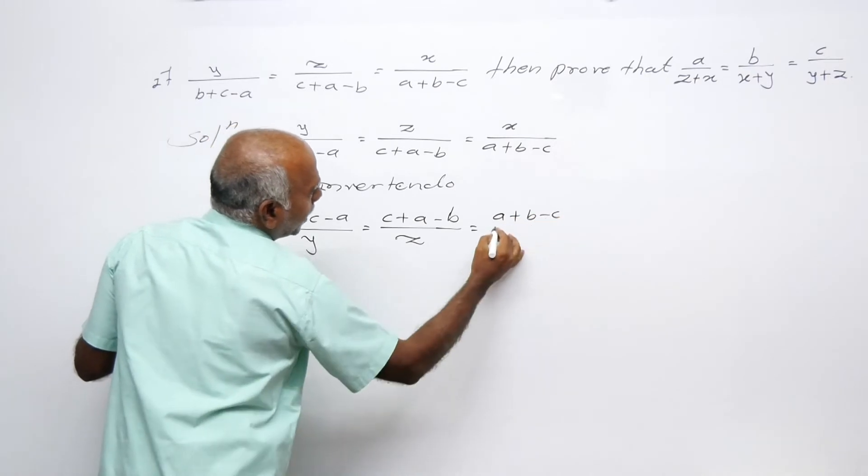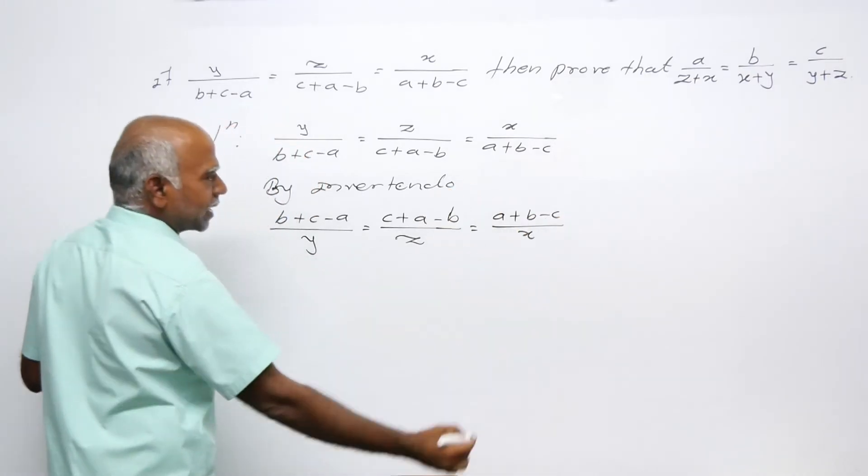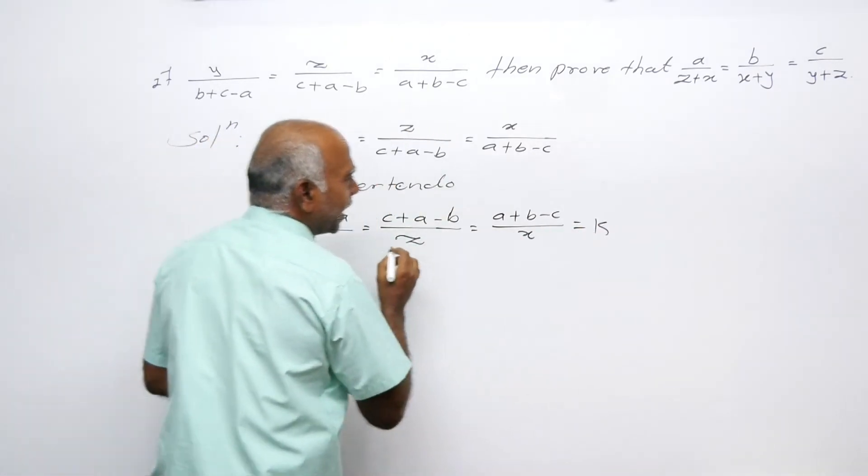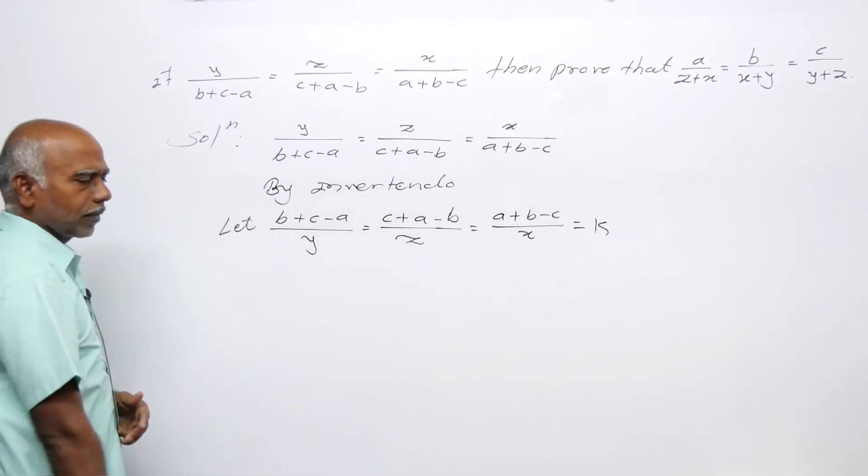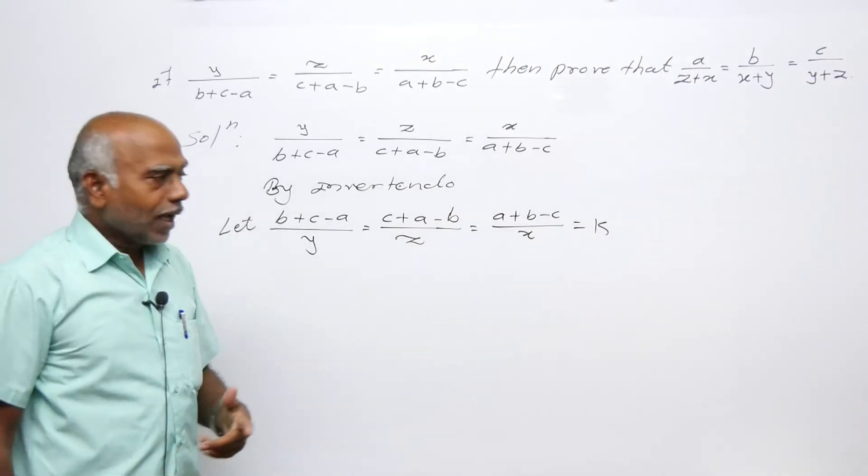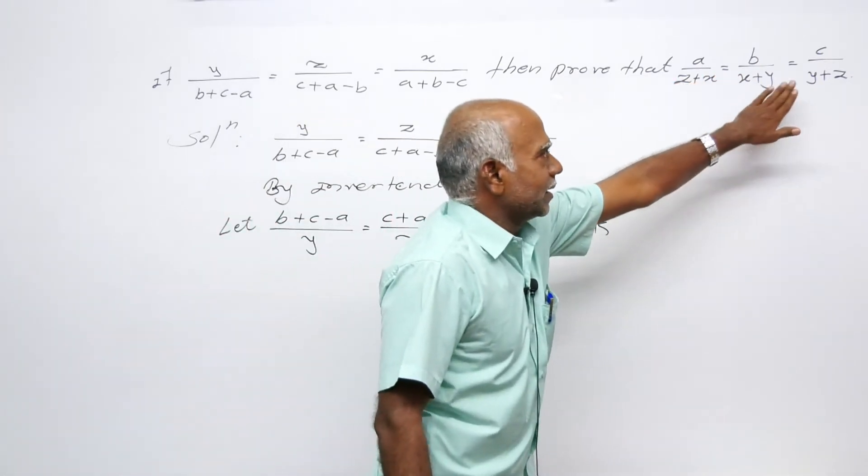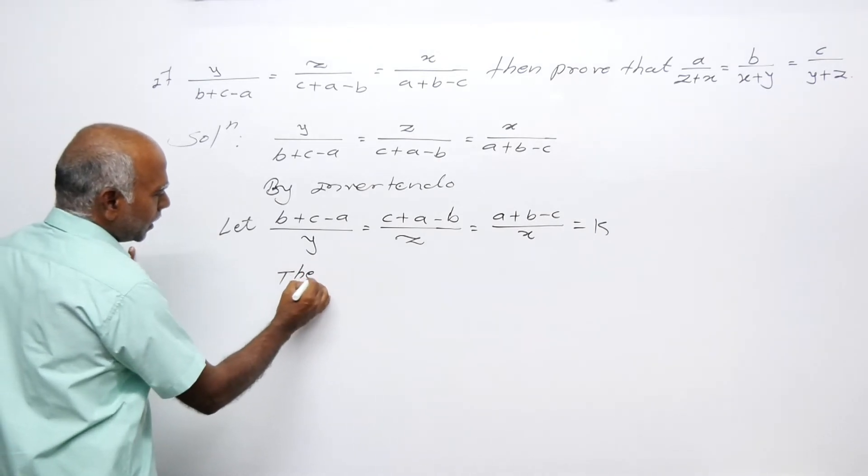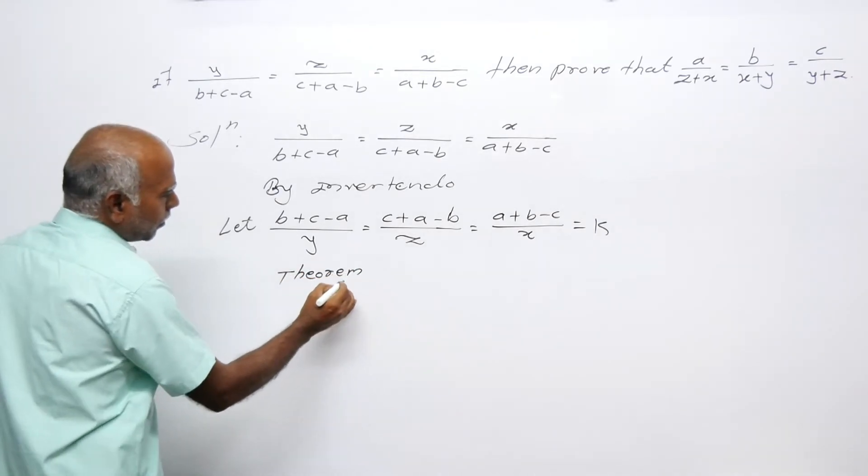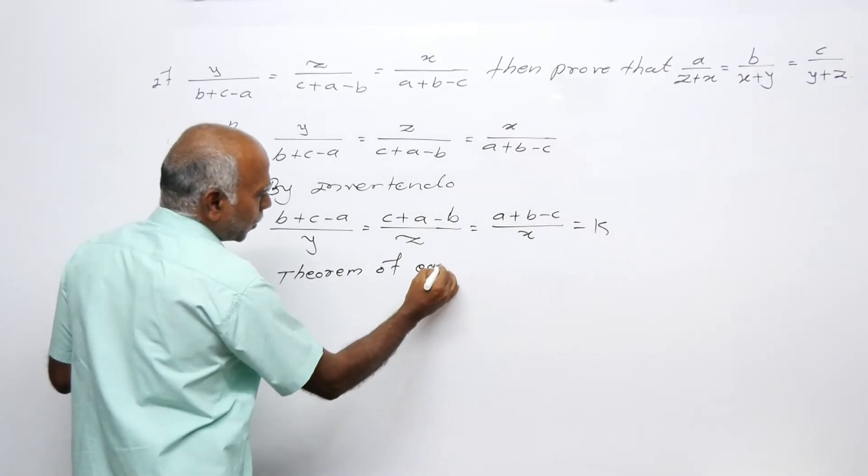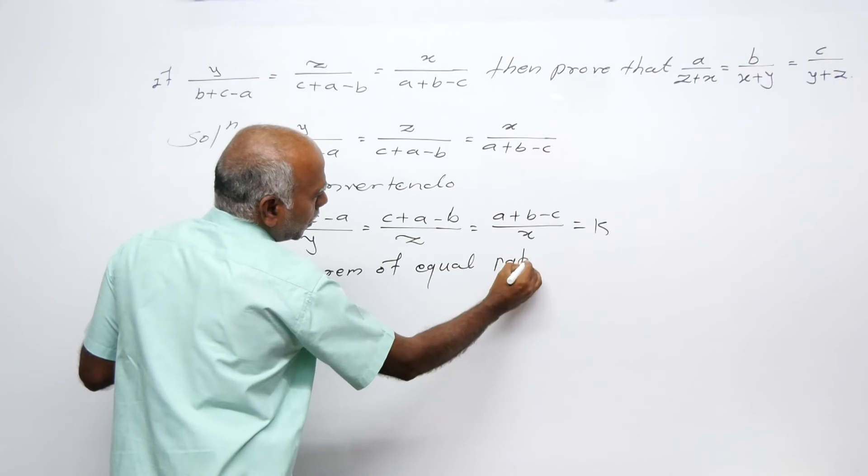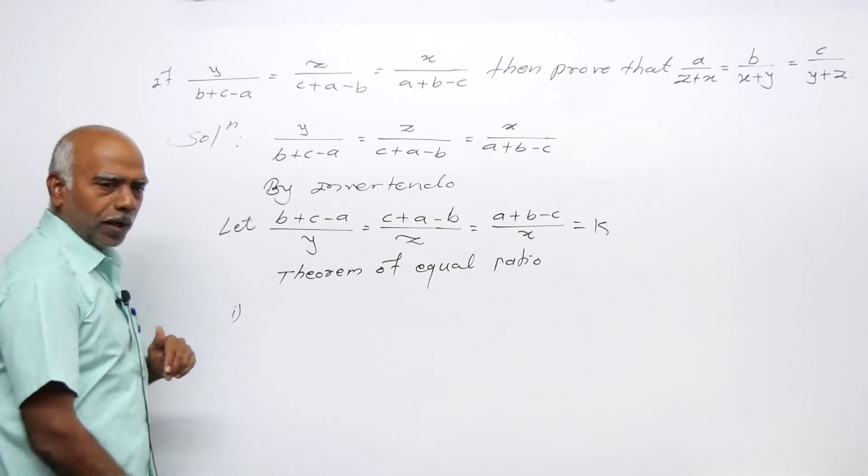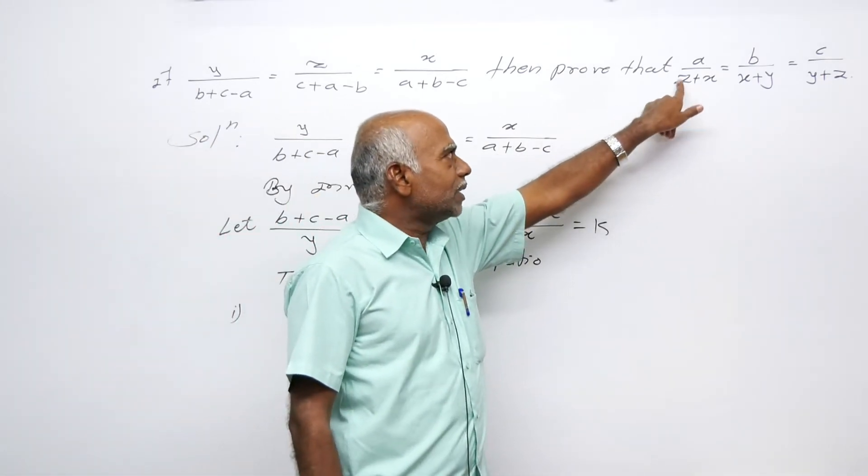C plus A minus B upon z, A plus B minus C upon x. After invertendo, each of these equals some constant k. This is from the theorem of equal ratio number 1.